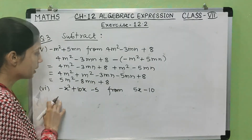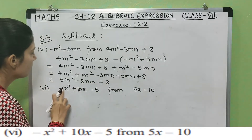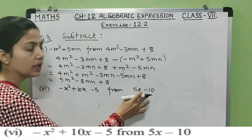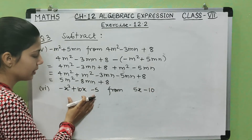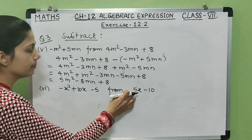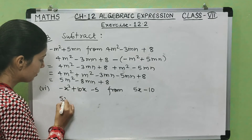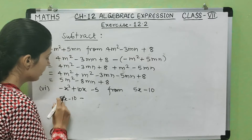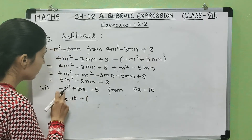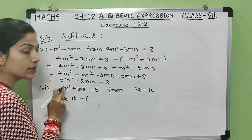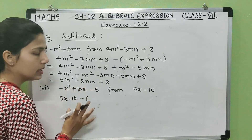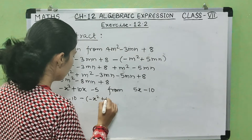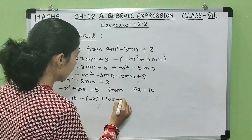Now the sixth part: subtract (minus x² plus 10x minus 5) from (5x minus 10). We write 5x minus 10 first, then minus. Since the first term of the expression being subtracted is negative, we put it in brackets: minus (minus x² plus 10x minus 5).